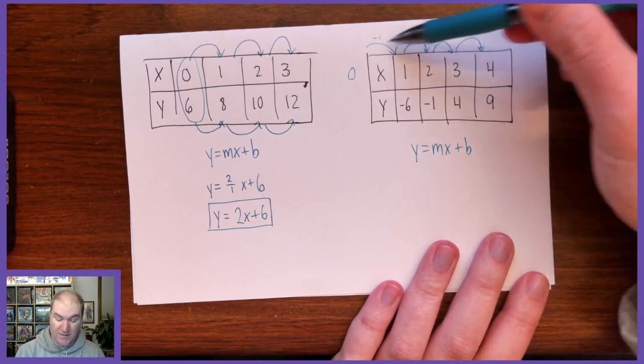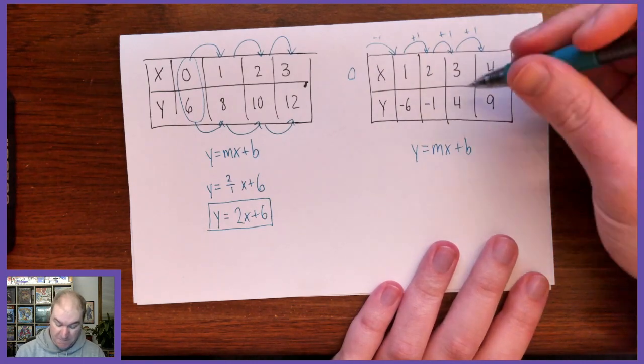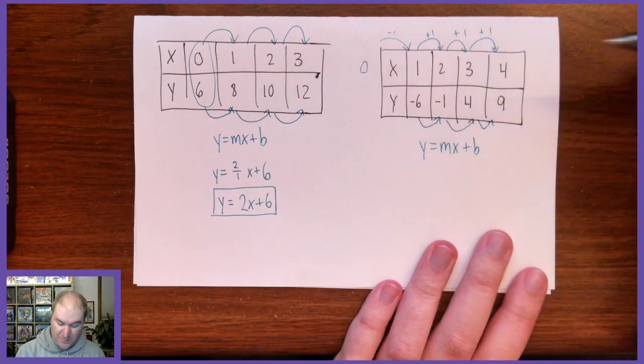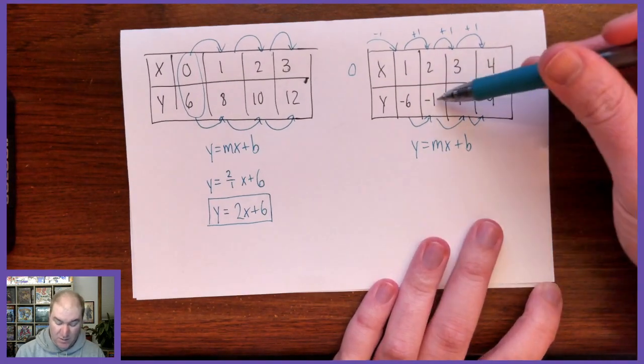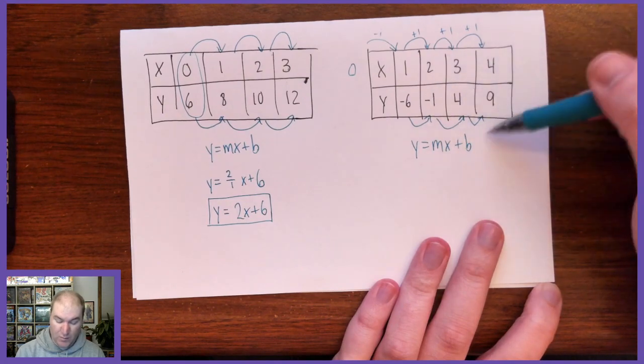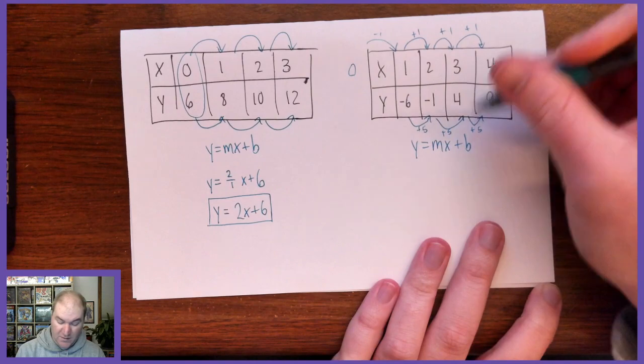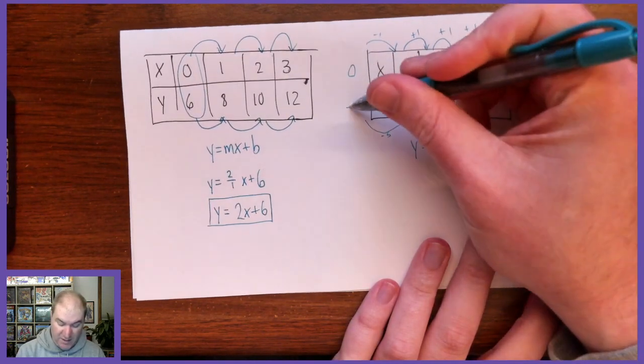And as long as we keep following the same pattern in both the x and the y, we'll have the right answer. So what's happening in the y's here, looks like they're going up by negative 6 plus 5 is negative 1. Negative 1 plus 5 is 4. 4 plus 5 is 9. They keep going up by 5. So if I want the 0, I'm going to go backwards 5 and get negative 11.